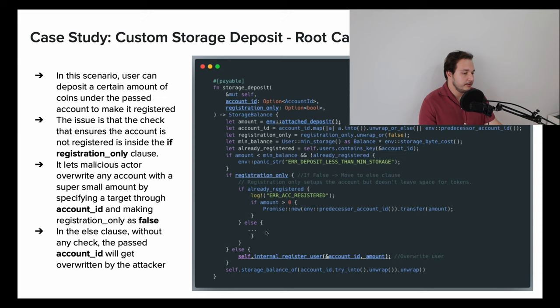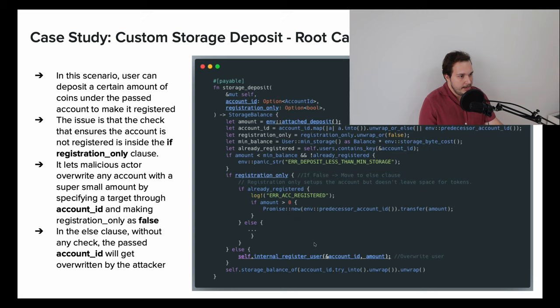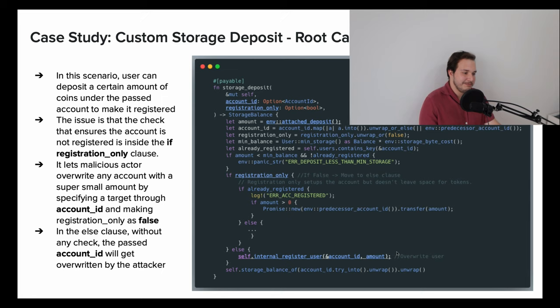The issue is that if we set registration_only to false, we skip the registration check and go directly to internal_register_user, registering or overwriting an existing account with the supplied amount. Also, the account_id is not coming from the caller — it's not from env::predecessor_account_id — so a malicious actor can put any account_id and any attached deposit amount and override an existing user with a super minuscule amount. Imagine someone has 10 NEAR deposited, and we override it with 0.01 NEAR — that's very bad.